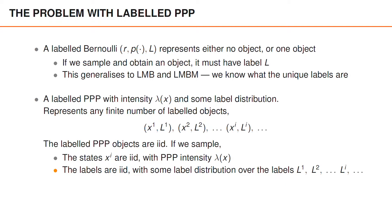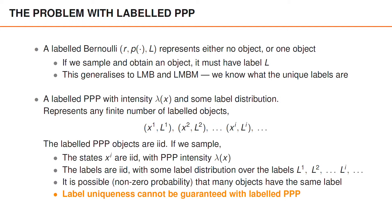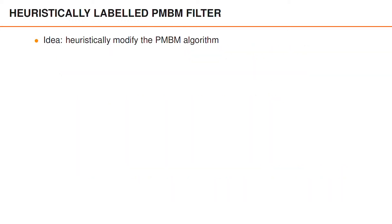And the labels LI are also independent and identically distributed with some label distribution over the labels L1, L2, and so on. So what this means is that it is possible — in other words, it has non-zero probability — that two or more objects have the same label. In other words, label uniqueness cannot be guaranteed with a labeled Poisson point process. And this is very problematic because unless the labels are unique, they are not useful for us.